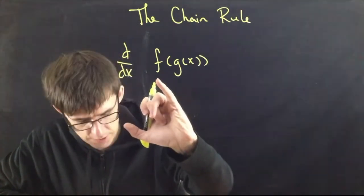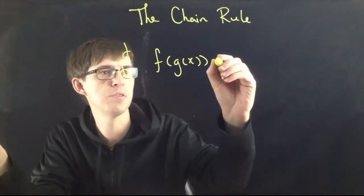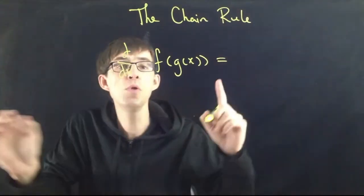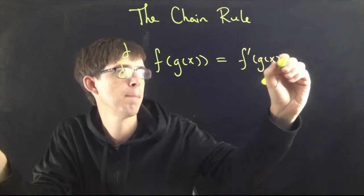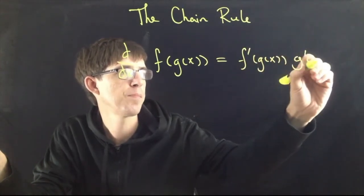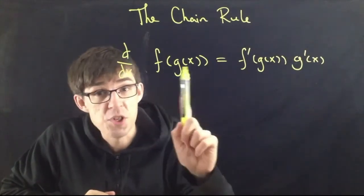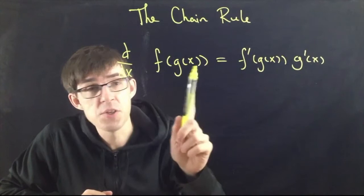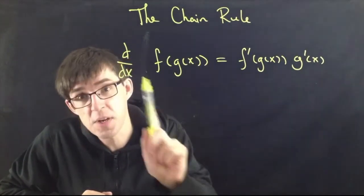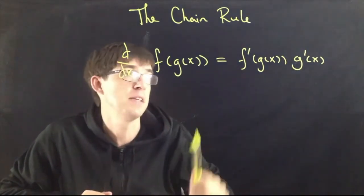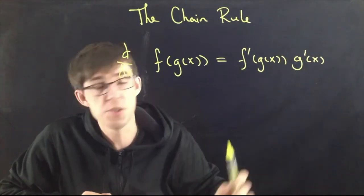You use the chain rule when you have a function on the outside and a function on the inside. The rule is: the derivative of f of g of x equals f prime of g of x times g prime of x. F is the function with G inside of it — this is not F times G of x.